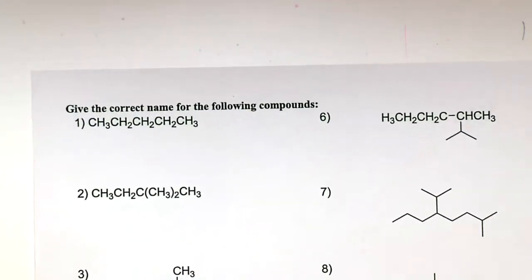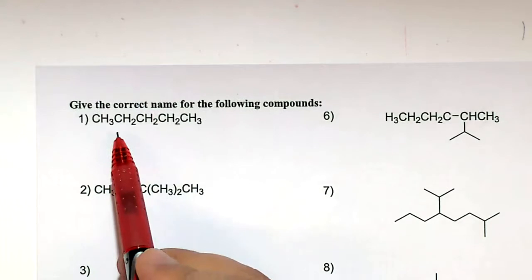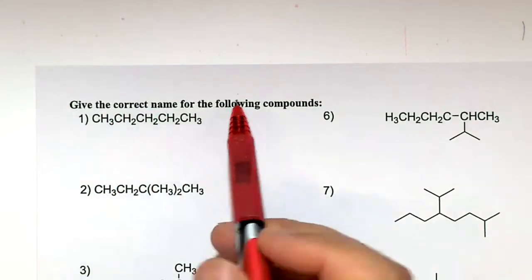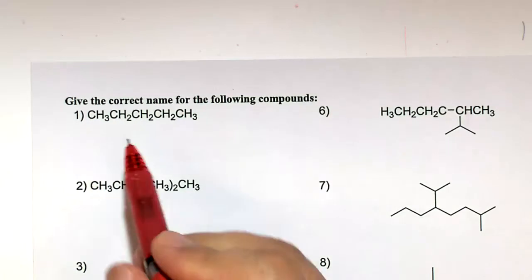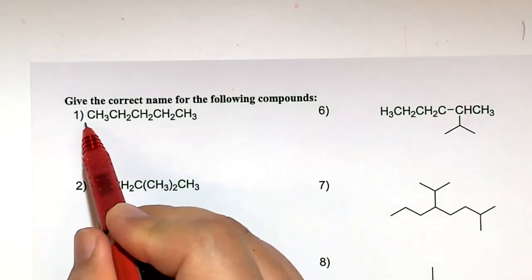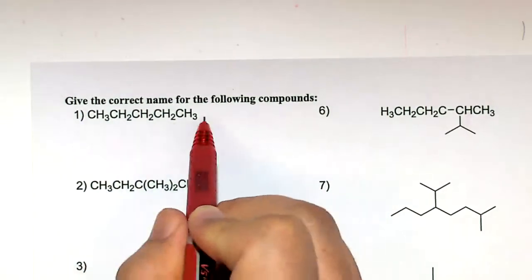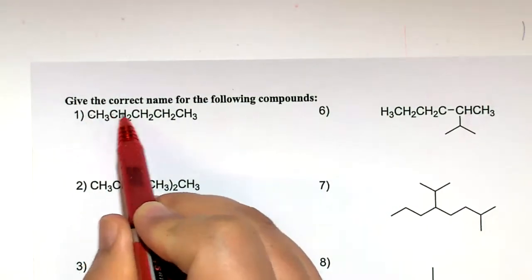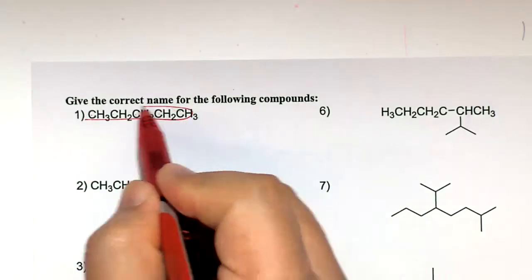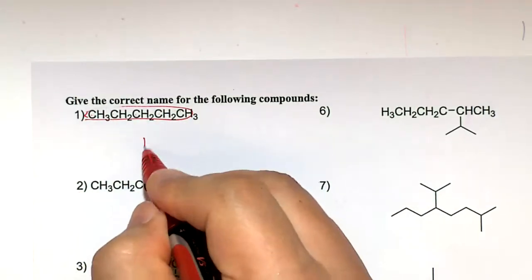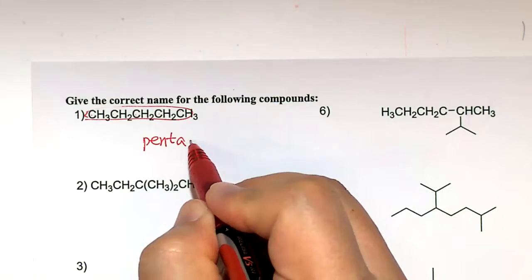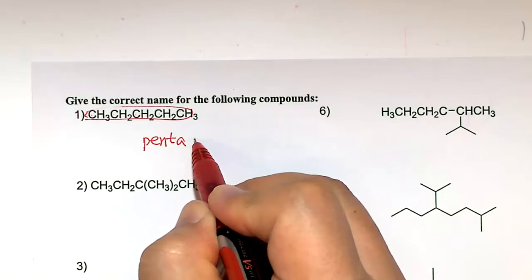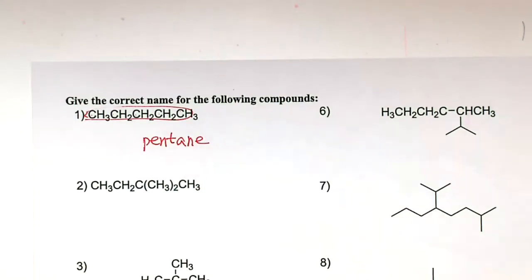Let's look at the first example: give the correct name for the following compound. Number one — count the carbon chain: 1-2-3-4-5. Five carbons is pent. This is an alkane with all single bonds. So the name is pentane.